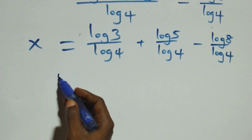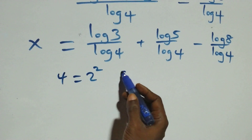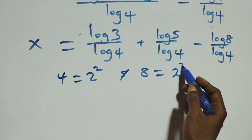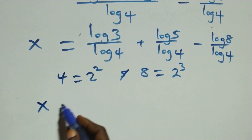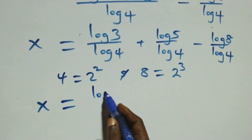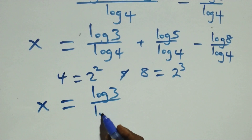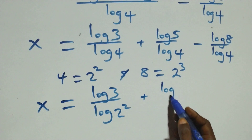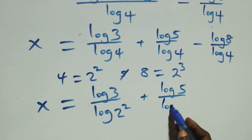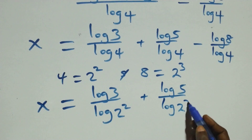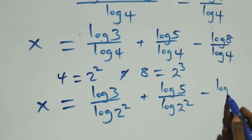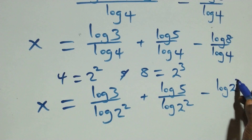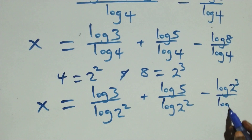Now we can write 4 as 2 times 2, which is 2 squared. And also 8 as 2 times 2 times 2, which is 2 cubed. So we have x equals log 3 over log 2 squared, plus log 5 over log 2 squared, minus log 2 cubed over log 2 squared.